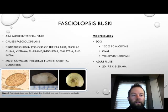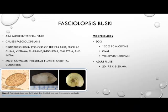The first organism we're going to talk about is Fasciolopsis buski. It is known as the large intestinal fluke, and infection causes Fasciolopsiasis. It's distributed in regions of the Far East, such as China, Vietnam, Thailand, Indonesia, Malaysia, and India, making it the most common intestinal fluke in Oriental countries.